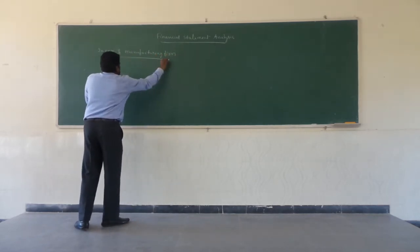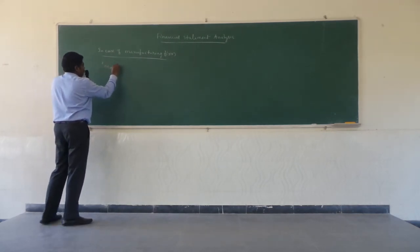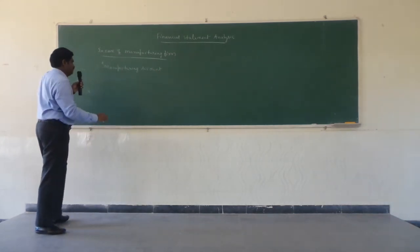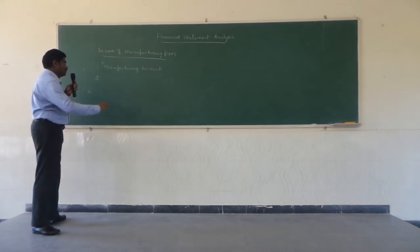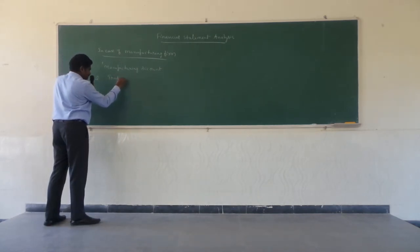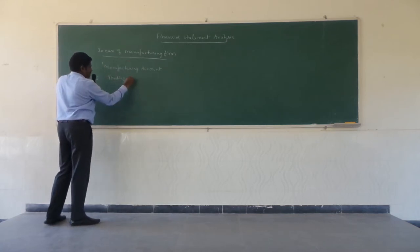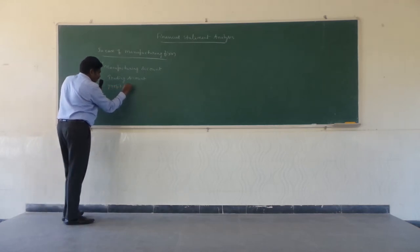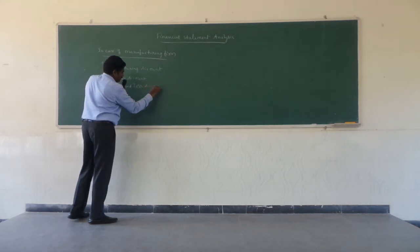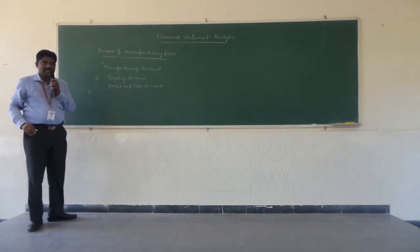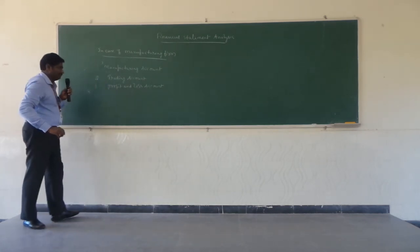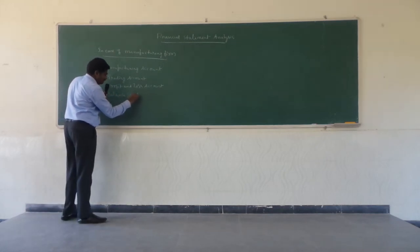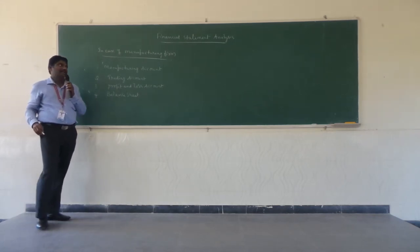In case of a manufacturing firm, the first stage is the manufacturing account, where whatever amount they have spent on direct expenses and indirect expenses is recorded. The second stage is the trading account. The third is the profit and loss account — also called the income statement — where we compare expenses with revenue to know the profit. The fourth stage is the balance sheet. These are the four stages prepared by the manufacturing organization.